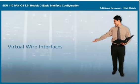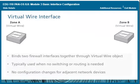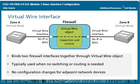Virtual Wire Interfaces. A virtual wire deployment binds two firewall interfaces together — also referred to as a bump-in-the-wire or transparent in-line deployment. No MAC or IP address is assigned to either virtual wire interface. A virtual wire configuration is typically used when no switching or routing is required, and no configuration changes are required for adjacent network devices. A virtual wire configuration is defined in two steps: creating the virtual wire object and configuring the virtual wire interfaces that the object connects. You can accomplish these steps in any order.